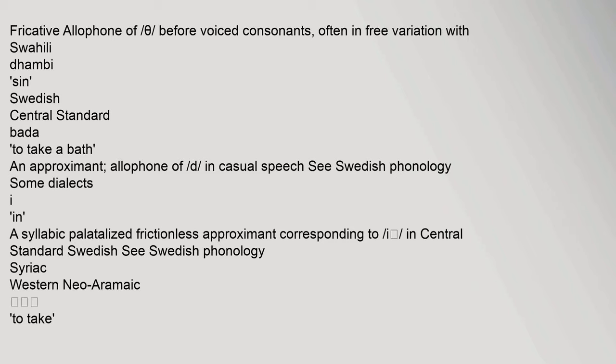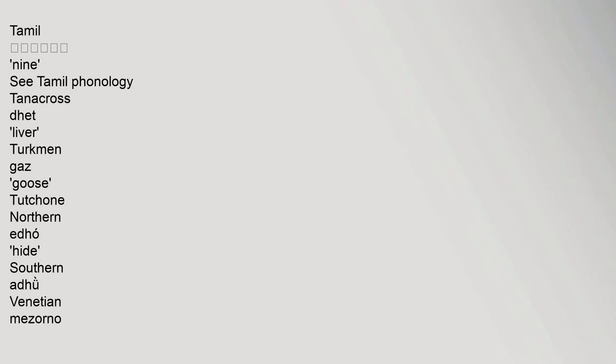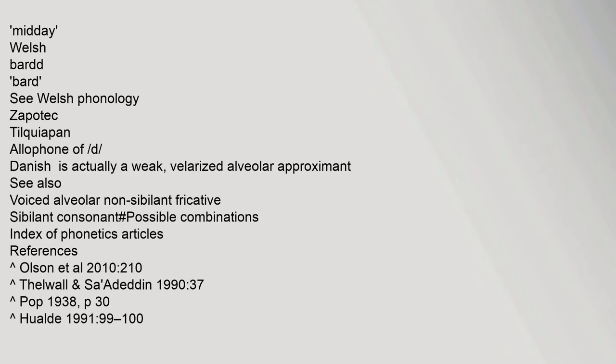In Sardinian, it is a fricative allophone before voiced consonants, often in free variation. In Swahili, it is an approximate allophone in casual speech. In Swedish, some dialects use it as a syllabic palatalized frictionless approximant. In Syriac and Western Neo-Aramaic, Tamil, Tanacross, and Venetian dialects, the sound is similarly attested. In Welsh, it appears in the word 'bard' (see Welsh phonology).